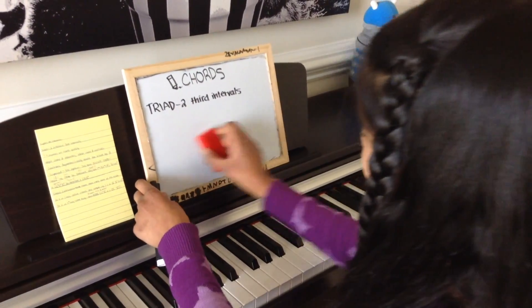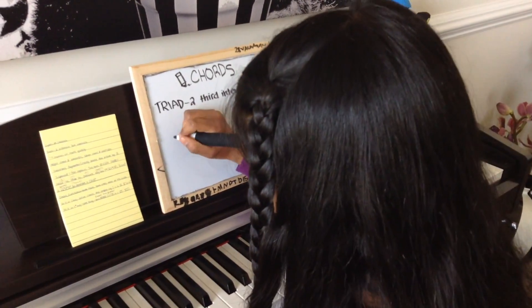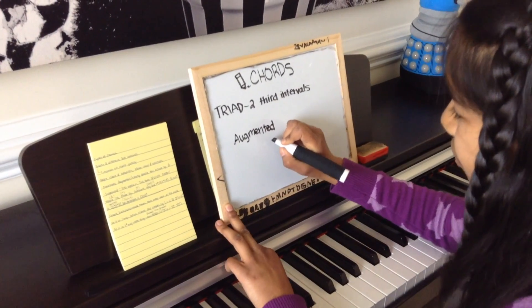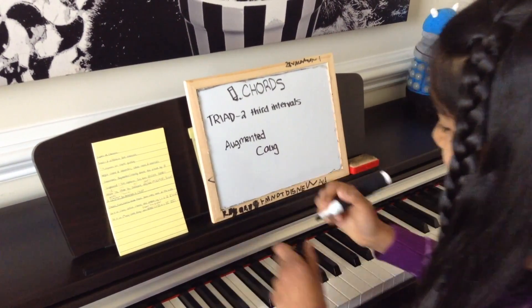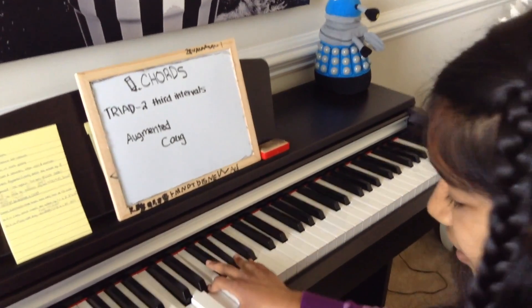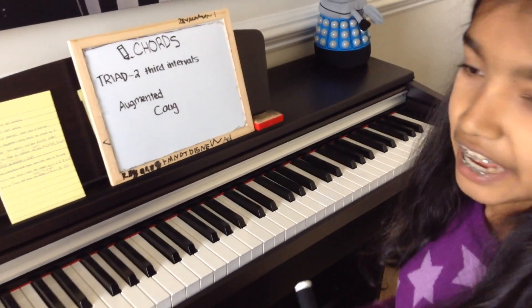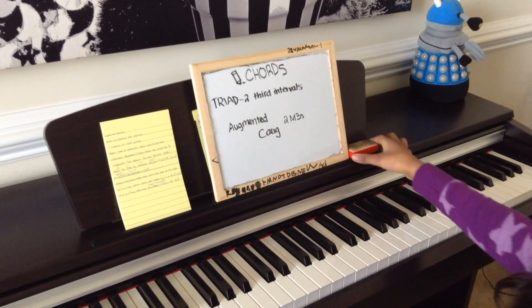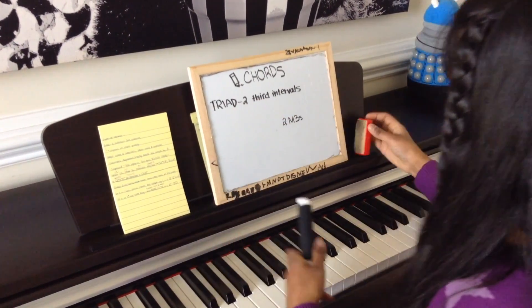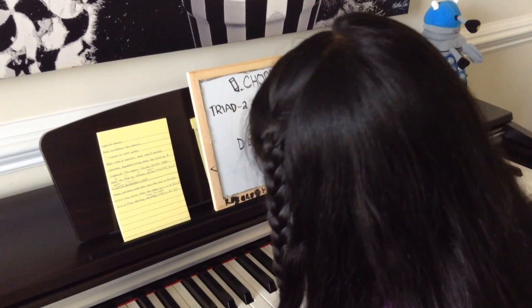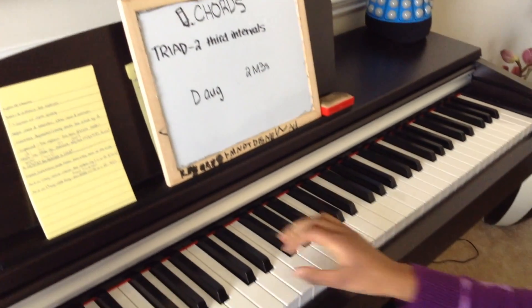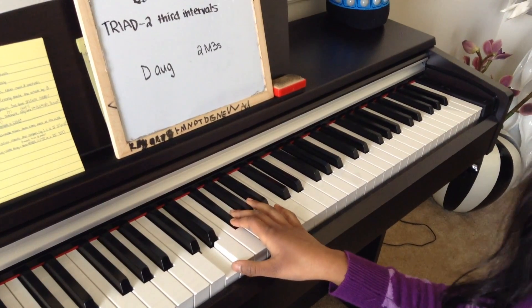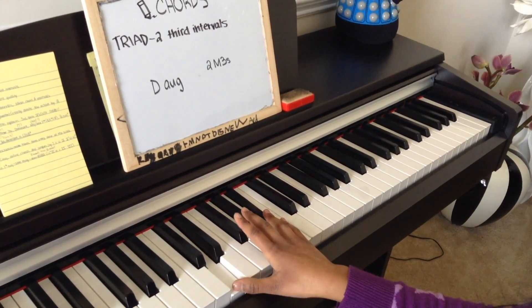The second-to-last type of triad is the augmented chord. Let's try a C augmented chord — it sounds like this. A C augmented chord is two major thirds. Now let's try D augmented. You start at D and go a major third, which is F sharp, and then another major third from F sharp, giving you D, F sharp, A sharp.